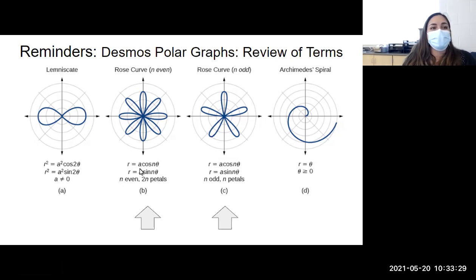So remember that for a rose, A still controls the diameter, and then N controls how many petals the rose has. For this pictured one for graph B, for the rose, this is kind of like a trick question. Do you all think it's a cosine or a sine? This is kind of tricky because it looks like kind of like both. Any guesses? It's okay to be wrong. We've got sine. We've got cosine. We've got a couple of different guesses.